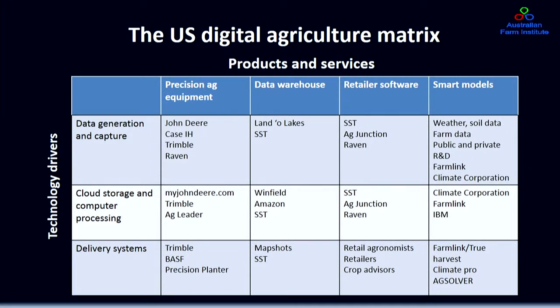Looking at developments in the Corn Belt, we've seen a very competitive market emerge quickly for the provision of digital information platforms and systems. There are makers of precision agricultural equipment generating and capturing data, some also providing storage and retrieval systems, and others utilising that data and insights back into the next iteration of decisions. Some are just involved in providing cloud storage and data warehouses — familiar names like Amazon acting as cheap storage facilities without doing much else.